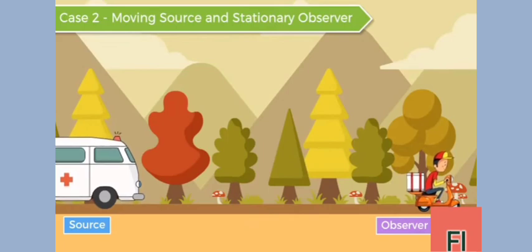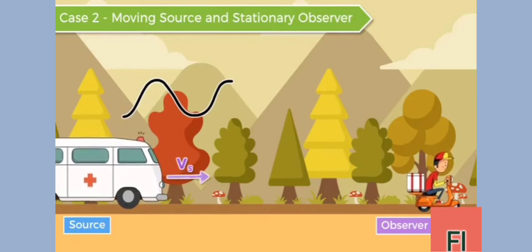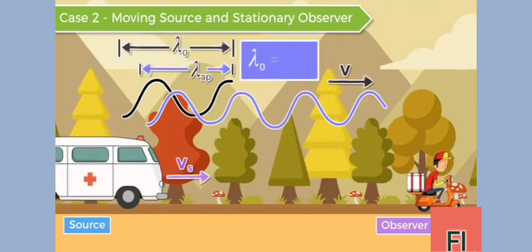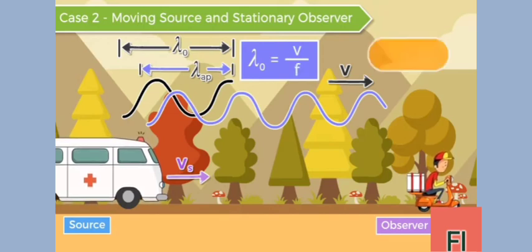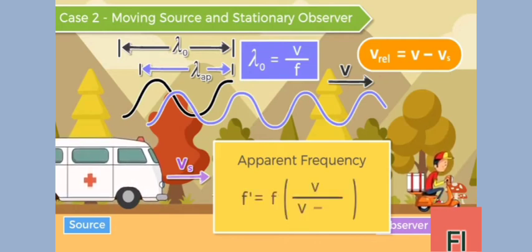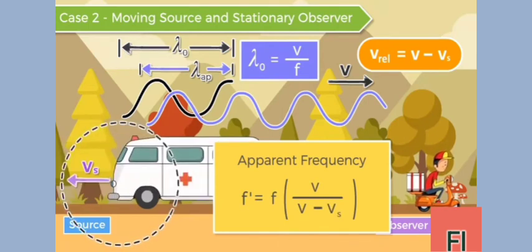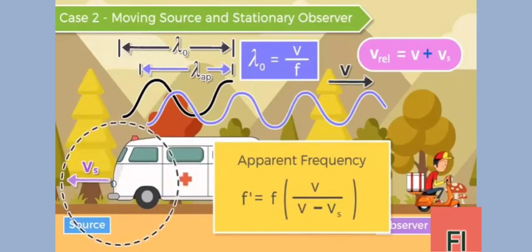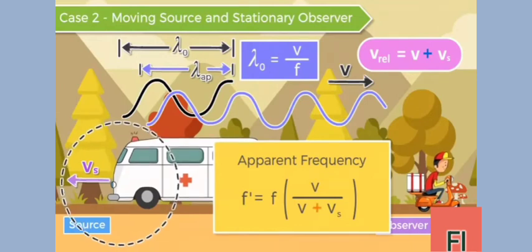Case 2: Moving Source and Stationary Observer. When a source moving with velocity vₛ produces a sound wave of frequency f and the waves travel towards an observer with velocity v, the wavelength is λ₀ = v / f. The relative speed of sound reaching the stationary observer is equal to v − vₛ. Therefore, the apparent frequency heard by the observer is f' = f × v / (v − vₛ). Similarly, if the source is receding away from the observer, the relative speed of sound is v + vₛ and the apparent frequency is f' = f × v / (v + vₛ).